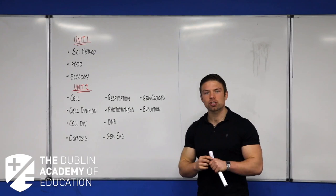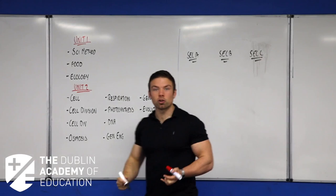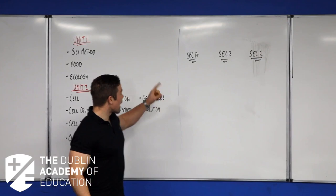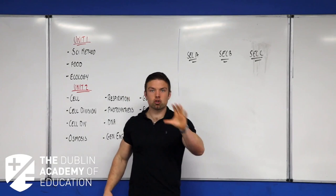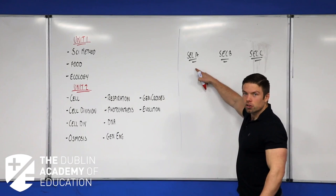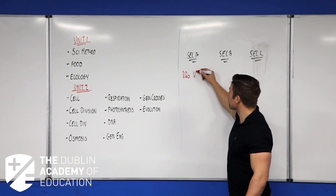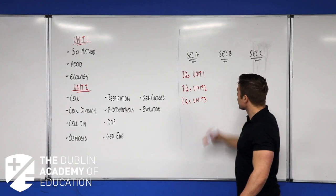There are three sections: Section A, Section B, and Section C. The majority of you will have done a mock, so you'd already know this. In Section A there are six questions — two of those questions have to come from Unit 1, two from Unit 2, and two from Unit 3.